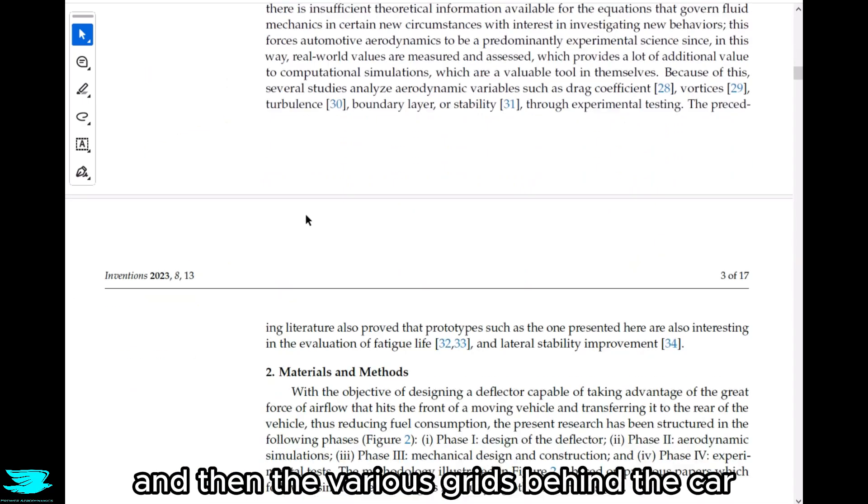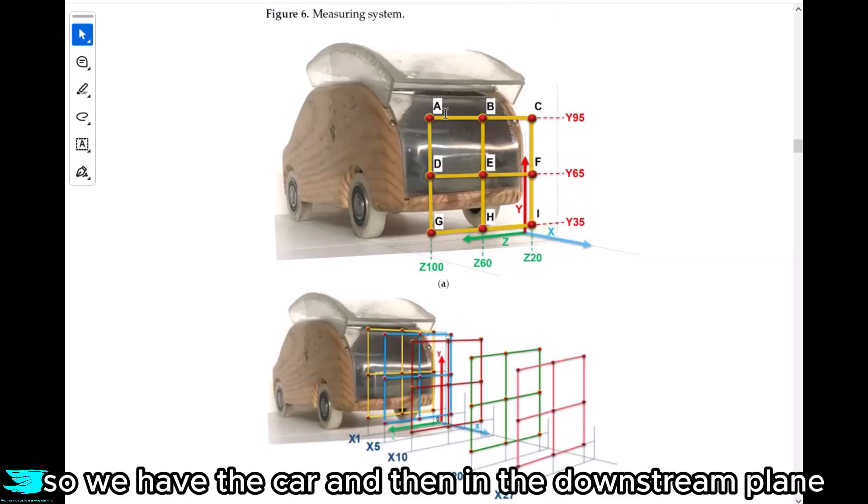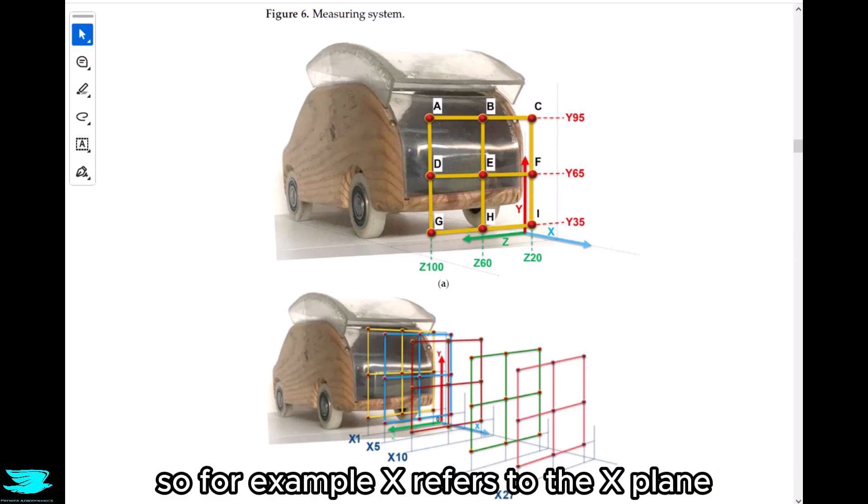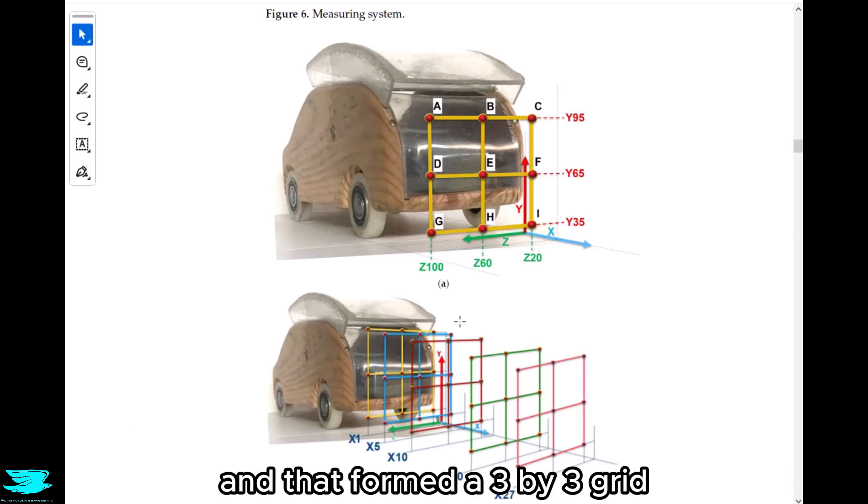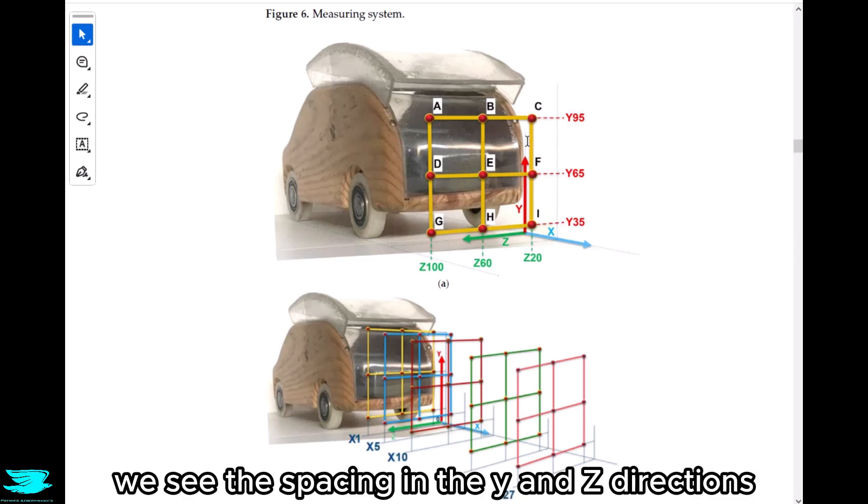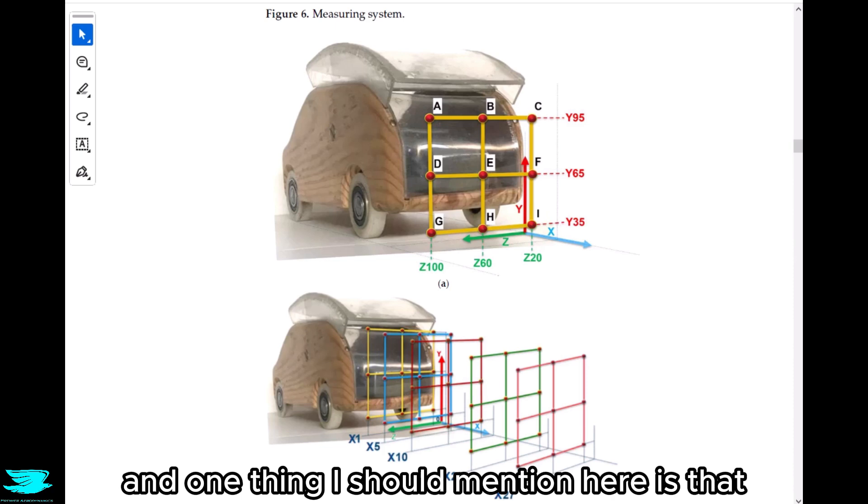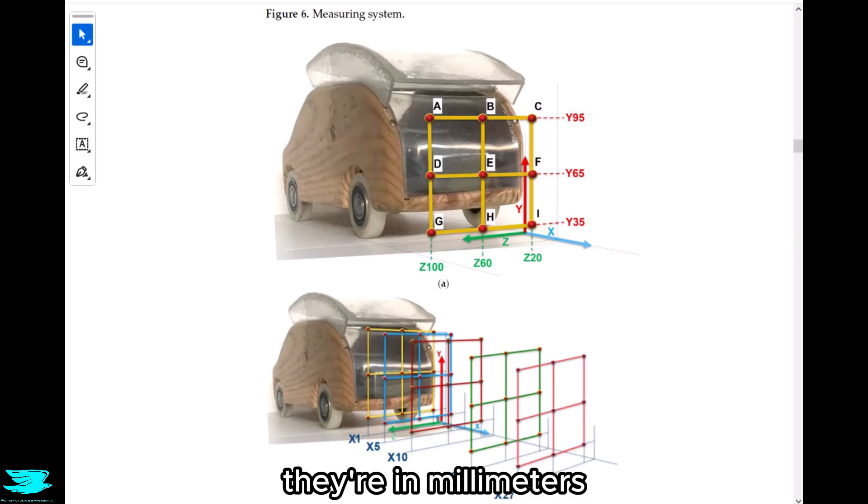In figure 7 we see the car and then the various grids behind the car at which they took the pressure measurements. We have the car and in the downstream plane we have all these various cross sections, and in each cross section we have these various locations where they took the pressures. The vertical planes were labeled x and then a number, for example x27 refers to the x-plane and the number refers to the distance behind the car in centimeters. Each x-plane had nine points forming a 3x3 grid. One thing I should mention is this paper doesn't do a very good job with units. For the x-planes they use centimeters, while for the y and z coordinates they're in millimeters. Then for the pressures they're in millimeters of water which is very strange and outdated. One millimeter of water is about 9.8 pascals, so about 10 pascals.